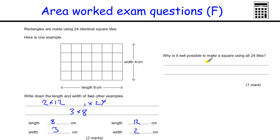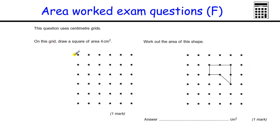Why is it not possible to make a square using all 24 tiles? Well, 24 is not a square number, is the reason. So there's no whole number that squared is 24, because 5 times 5 is 25 and 4 times 4 is 16, so you couldn't make it with a whole number. You can do it with a decimal, but you can't do it with a whole number.